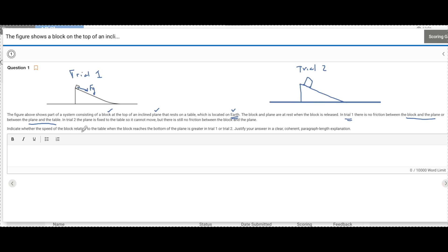Indicate whether the speed of the block relative to the table down here, when it reaches the bottom is greater in trial one or trial two, justify your answer in a clear, coherent paragraph length explanation. They're essentially saying which one of these two blocks is going to be moving the fastest when it gets down here and why.